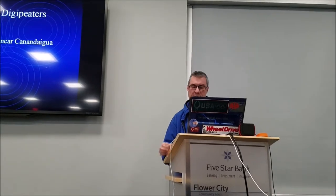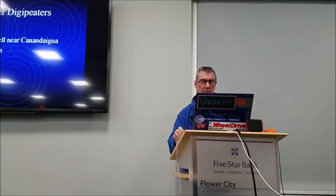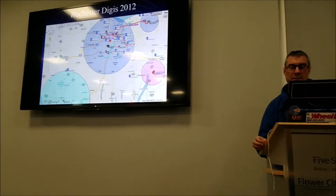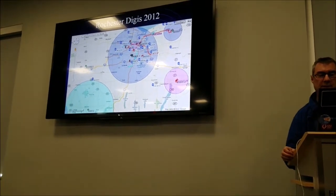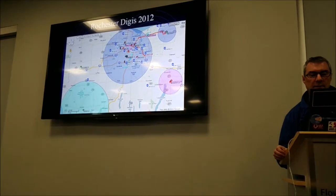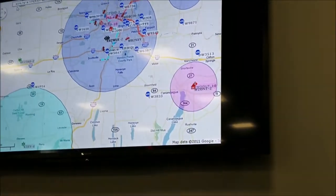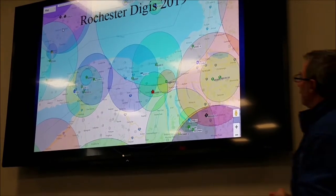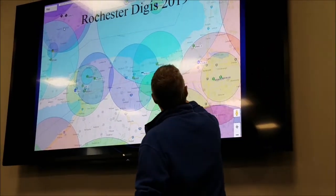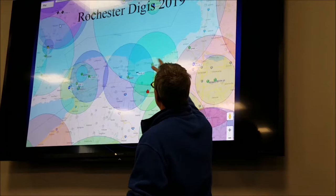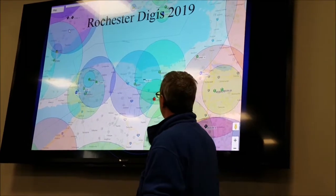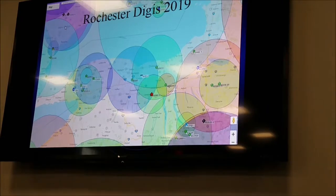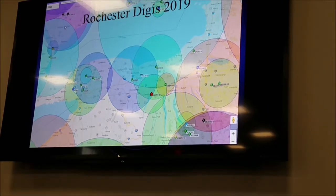These are some of the digipeaters around here. In 2012 when I last gave this presentation, these were the digipeaters and you could see they didn't cover everywhere. A current search shows the digipeaters that are showing now — maybe in some areas you might have a little trouble. These are just estimated ranges of the stations, but it's pretty good coverage around here. You can see how two hops is plenty to get onto the network.